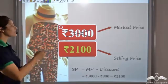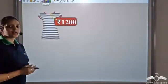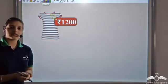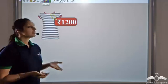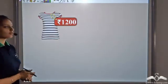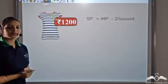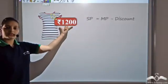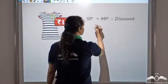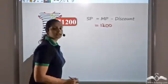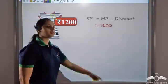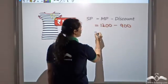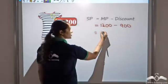Now there is another customer who comes to buy a t-shirt priced at Rs.1200. The customer again comes with the gift voucher entitling them to buy for Rs.900 free of cost. Selling price is again Marked price minus discount. The marked price is Rs.1200, the gift voucher of Rs.900 is the discount. So the selling price is Rs.1200 minus Rs.900, which is Rs.300.